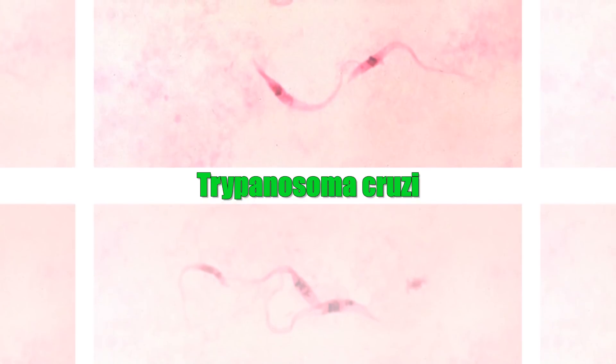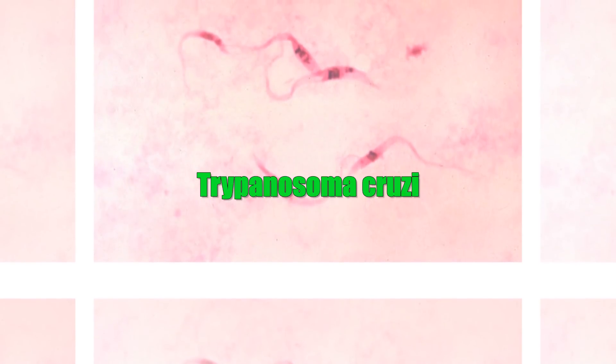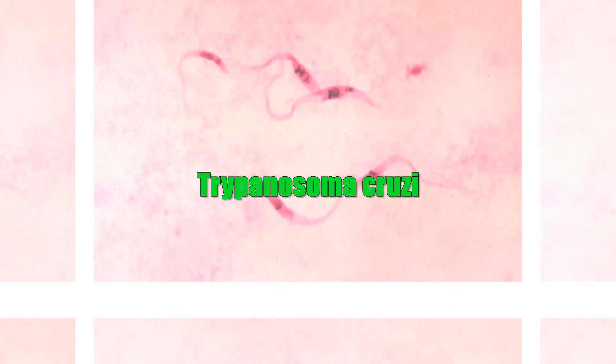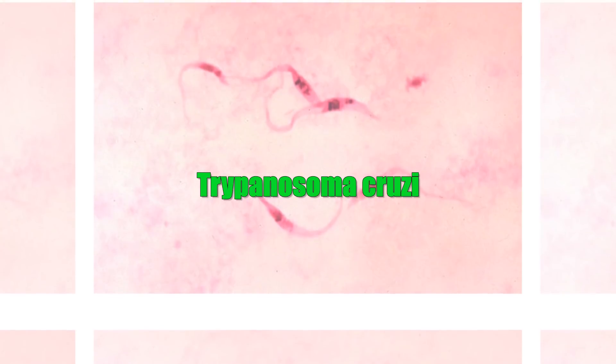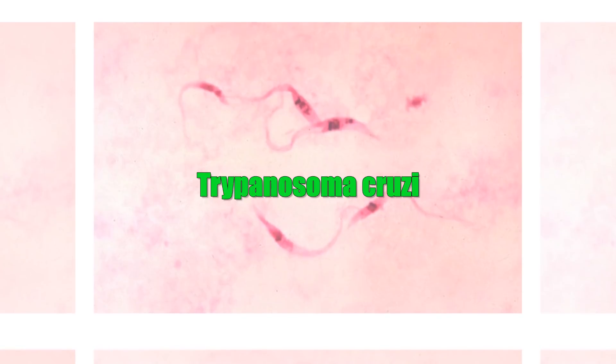Trypanosoma cruzi. Trypanosomiasis, or Chagas disease, is caused by the parasite Trypanosoma cruzi, and is transmitted to people through bites from insect vectors. Trypanosoma cruzi is a species of parasitic euglenoids. Amongst the protozoa, the trypanosomes characteristically bore tissue in another organism and feed on blood primarily and also lymph. Up to 40% of people infected by T. cruzi develop heart complications associated with chronic Chagas disease, such as heart rhythm abnormalities, a dilated heart that doesn't pump blood effectively, and congestive heart failure.